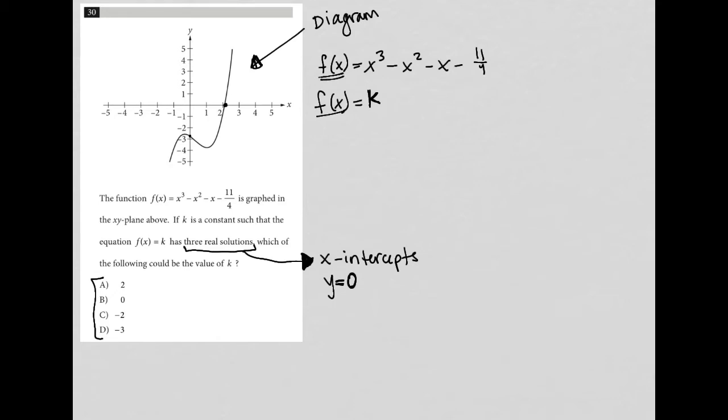Well, they both say f(x). Anytime I see that, I think substitution. So I could rewrite this as x³ - x² - x - 11/4 = k. And in doing so, I would want to subtract k from both sides to make it equal to zero. So x³ - x² - x - 11/4 - k = 0.